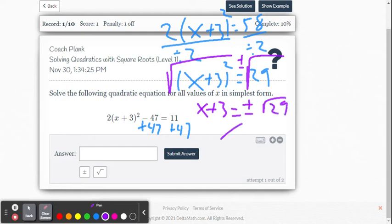So you can think of this as two equations, right? It's going to be x plus 3 equals the negative square root of 29, and x plus 3 equals positive square root of 29.